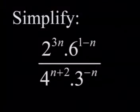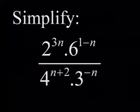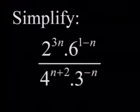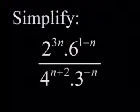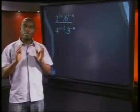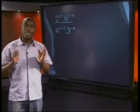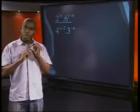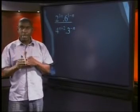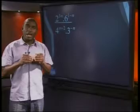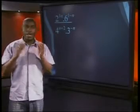Let's look at this example. Simplify 2 to the power 3n times 6 to the power 1 minus n, all divided by 4 to the power n plus 2, times 3 to the power of minus n. You must learn to think about the problem first before just writing down answers. Ask yourself: what do I have here? The numerator has bases and the denominator has bases that are the same.